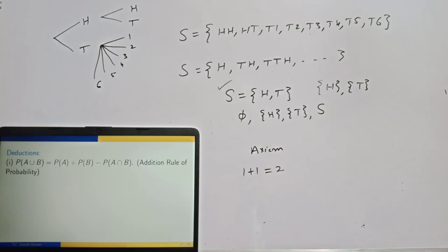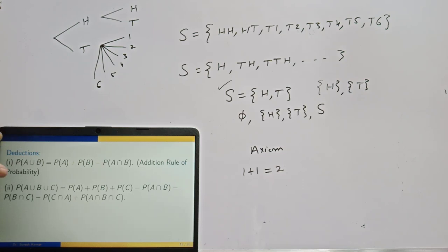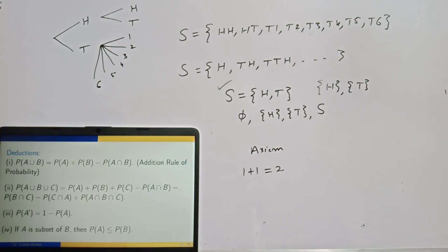From these three axioms we can derive useful results. The first is the addition rule of probability — its proof is in the lecture notes. The addition rule states: P(A union B) equals P(A) plus P(B) minus P(A intersection B). There is also an extended addition rule for P(A union B union C). Additionally, P(A complement) equals 1 minus P(A), and if A is a subset of B, then P(A) is less than or equal to P(B).